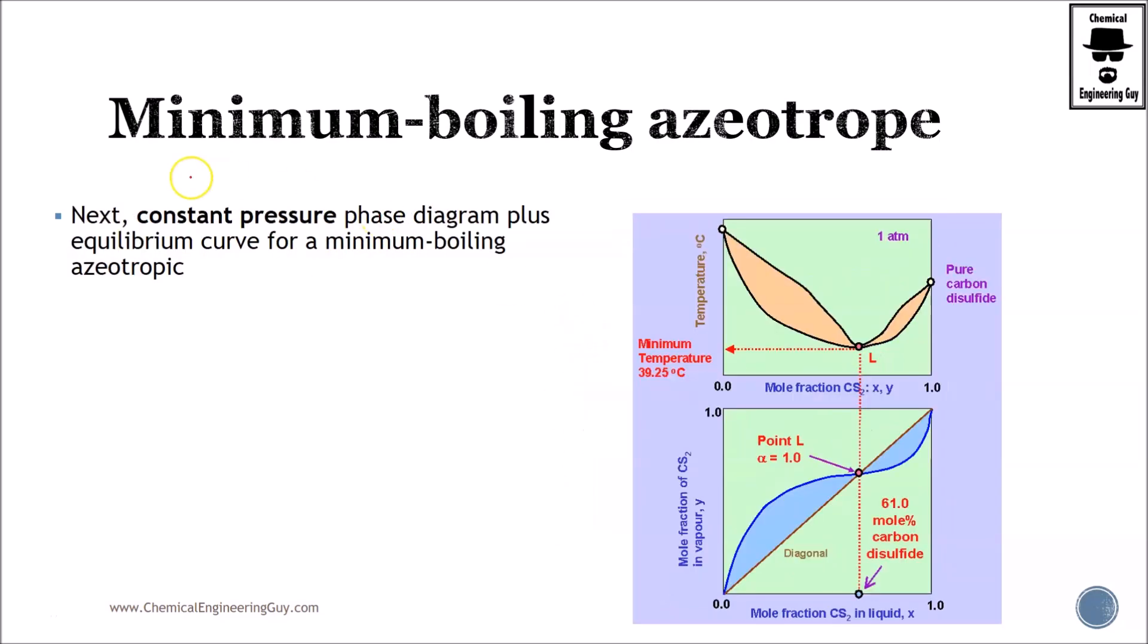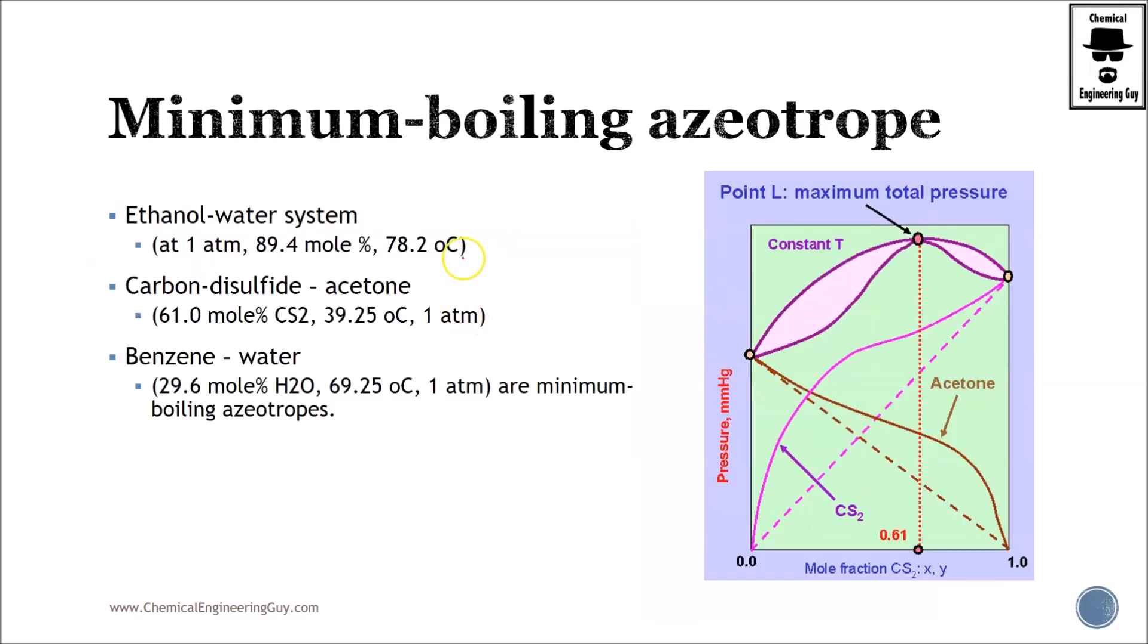If you wanted to check out a temperature diagram, which is right here, you will see that the point will be at a minimum. At constant pressure, if we were to graph this minimum-boiling azeotrope, we will have this point right here, and this is the lowest point in the diagram. That's why it's called the minimum-boiling azeotrope.